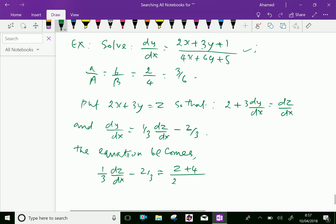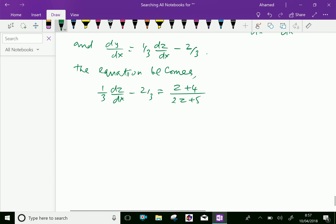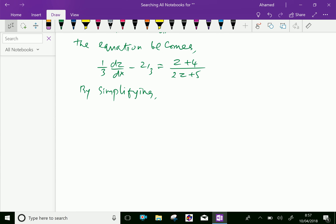The denominator 4x + 6y + 5 becomes 2 times (2x + 3y) + 5, which is 2z + 5. By simplification, we get dz/dx equals (7z + 22) over (2z + 5).